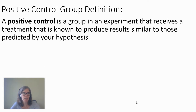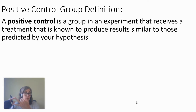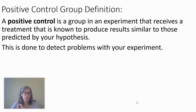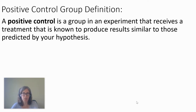So what is a positive control group? It's a group in an experiment that receives a treatment that's known to produce some similar results to those that are predicted by your hypothesis. You'll probably have a negative control group, your treatment group, and then maybe also a positive control group. This is done to detect problems with your experiment and to have something to compare your experiment to when you know what should happen — when you expect some kind of positive result.